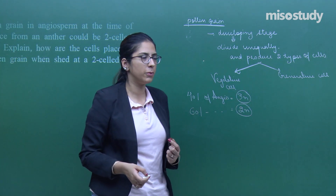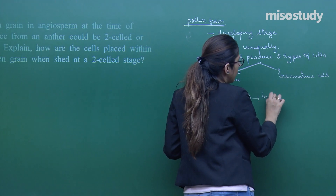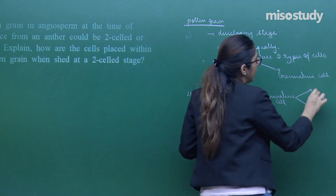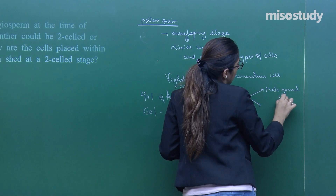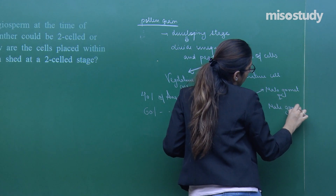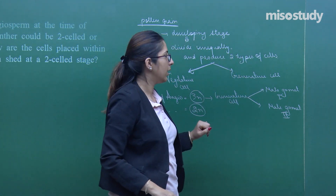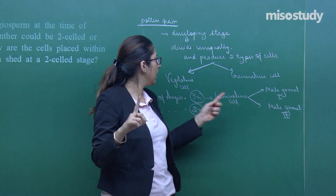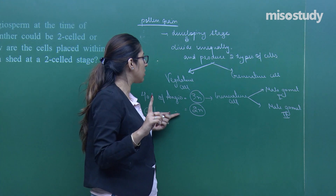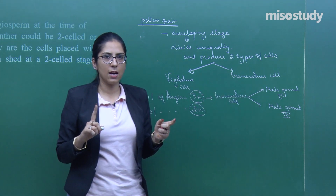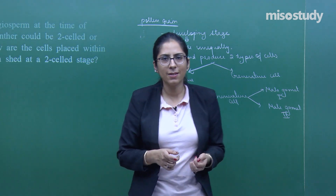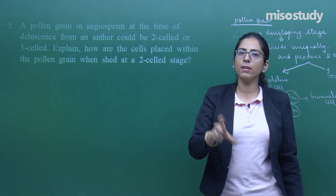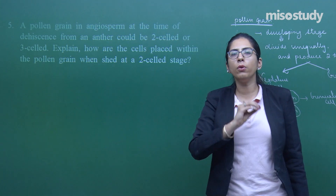In 40% of angiosperms, the 3-celled condition is seen — the generative cell further divides into 2 male gametes, giving a total of 3 cells: vegetative cell, male gamete 1, and male gamete 2. Since this is a two-mark question, give a concise point-wise explanation — no need for lengthy detail.